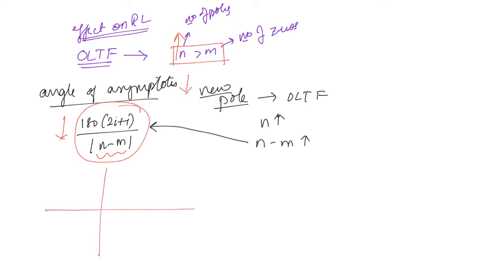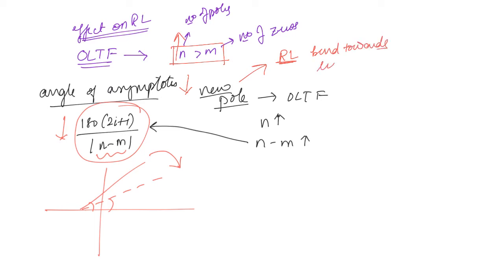If you take the angle of asymptote, let us say it is like this — this is the angle. Now the angle is reducing; let us say this is the new angle. You can see that it is bending towards the real axis, bending towards the right. Since the root locus follows the asymptotes, when the asymptotes bend towards the right, the root locus will also bend towards the right. So when there is a new pole, the root locus will bend towards the right.